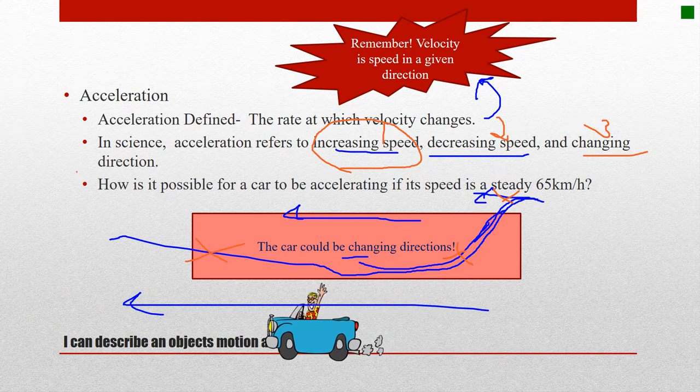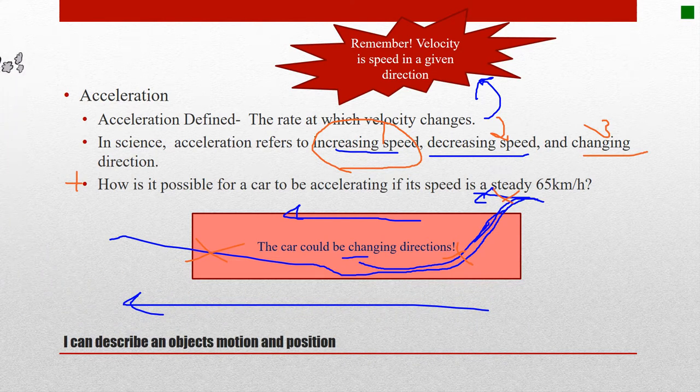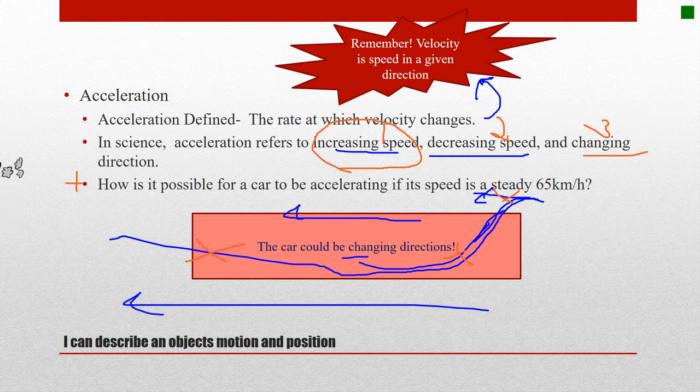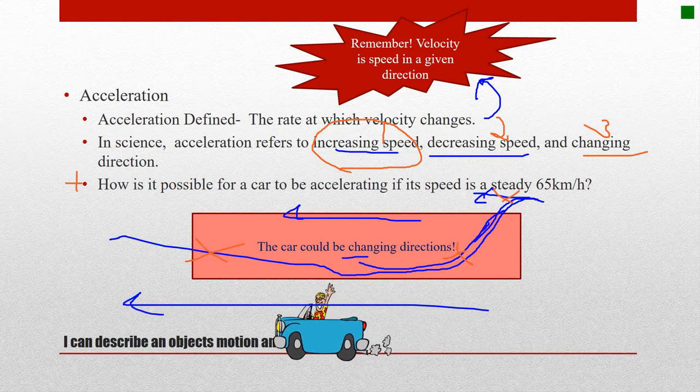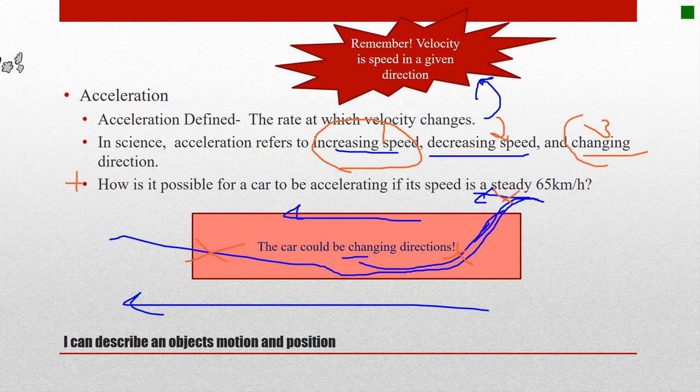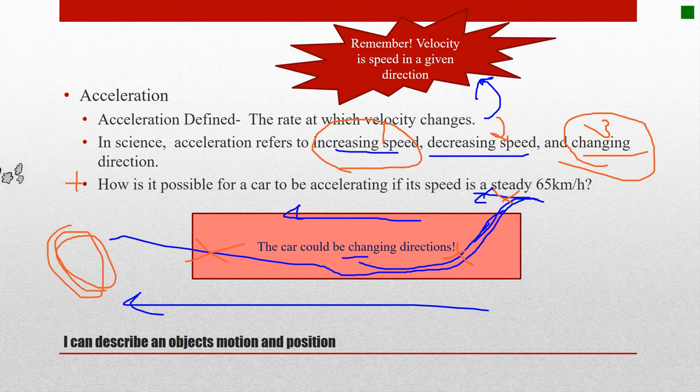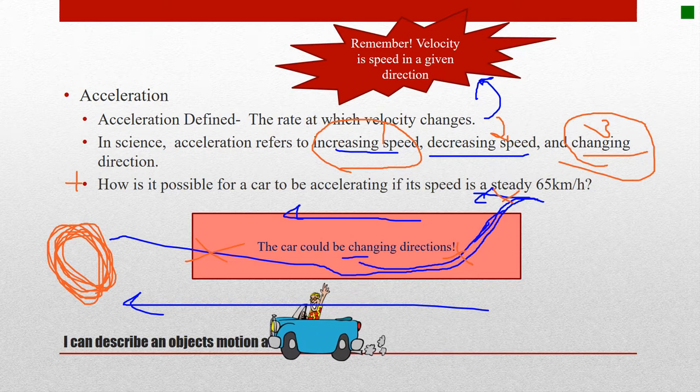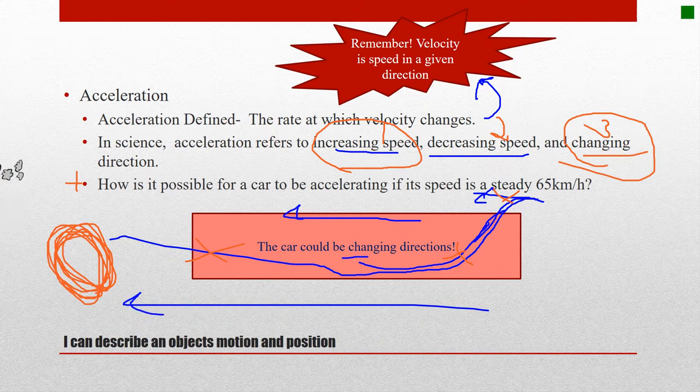Now in our everyday language, a lot of times we just focus on this one, but in physics, it's all three. This is what makes this hard. And we will talk more about this later on this week. How is it possible for a car to be accelerating if its speed is a steady 65 miles per hour? Well, it's constant speed, so it's not increasing or decreasing. So what may be happening? Oh yeah, brilliant. It could be changing direction. It could be going in a circle, sort of like NASCAR over and over for hours. They're constantly accelerating, even though they may be going the same speed. They're always changing direction, so they're always constantly accelerating.